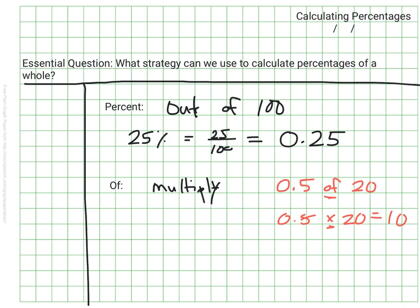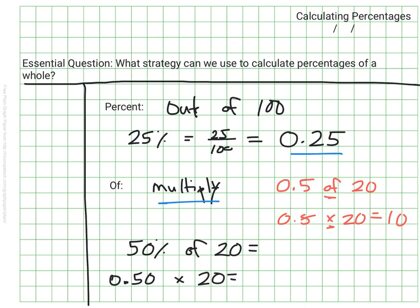Going back to our work with percentages, we're actually going to use both of these things: the fact that percent can be written as a decimal, and the fact that 'of' lets us know that we can multiply. For example, we want 50% of 20. I could rewrite this — 50% becomes the decimal 0.5, and 'of' means multiply. So I'm really just multiplying 5 tenths times 20 to get 10. So 50% of 20 is 10.